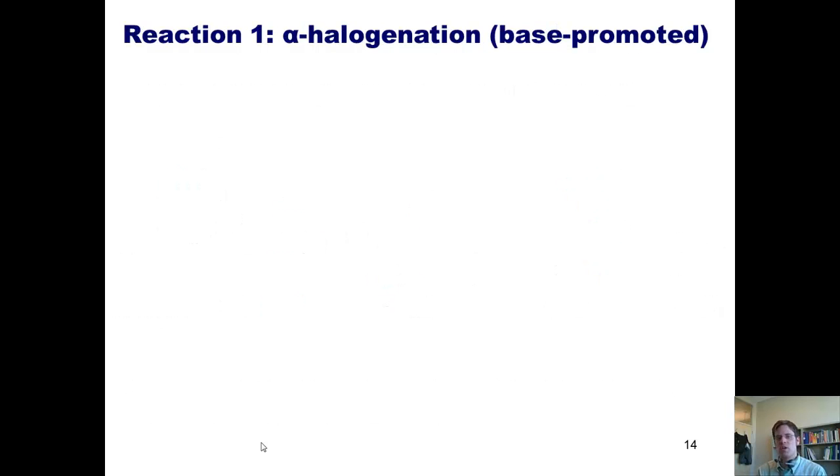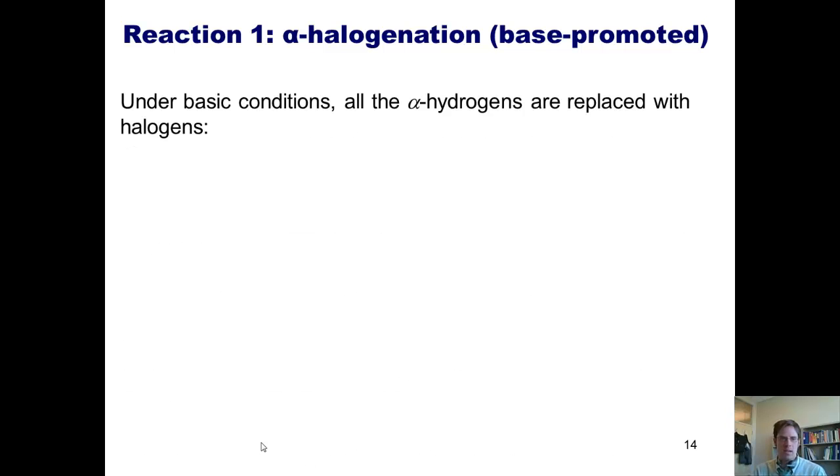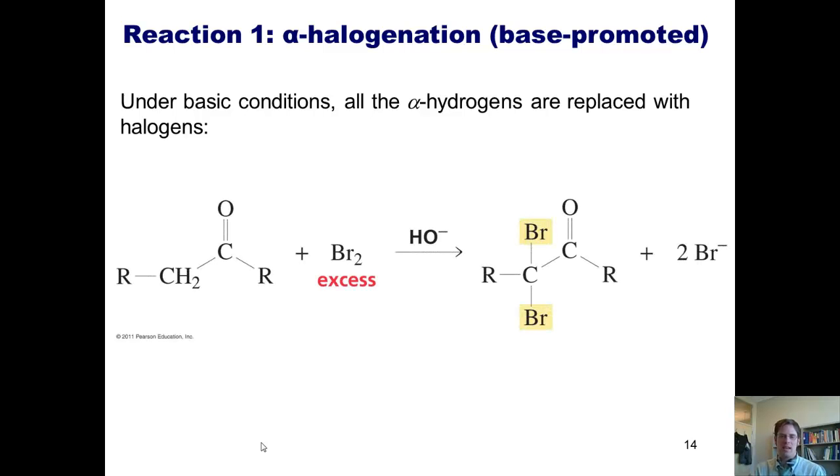Now you heard me mention earlier that you cannot do alpha halogenation under base-promoted conditions. I'm going to show you why. Under basic conditions, all of the alpha hydrogens end up getting replaced with halogen atoms. So what occurs is the base removes a single alpha hydrogen, giving me a negative charge at the alpha carbon. That negative charge reaches out, grabs a halogen to put a single halogen on that alpha carbon. But the problem is that you can't stop the base from removing the second alpha hydrogen.